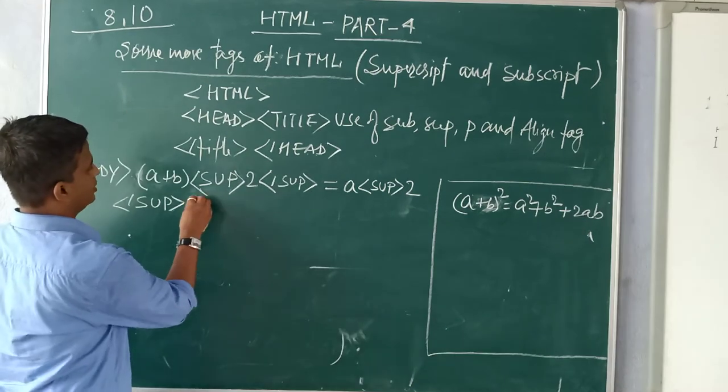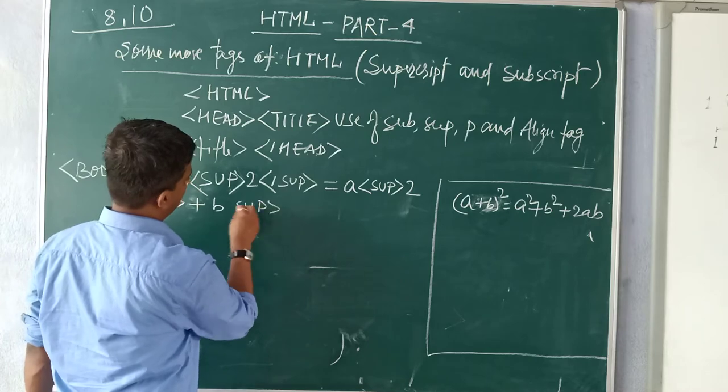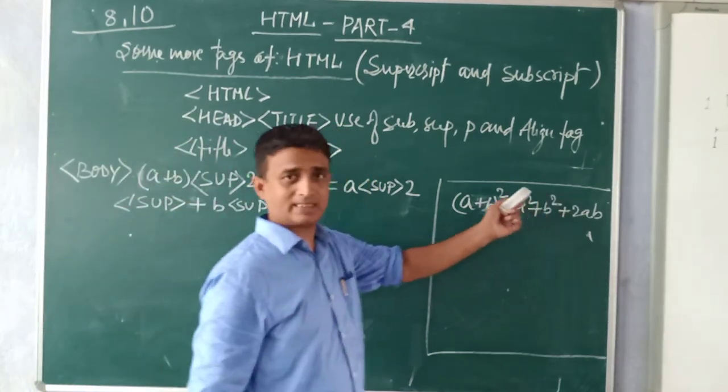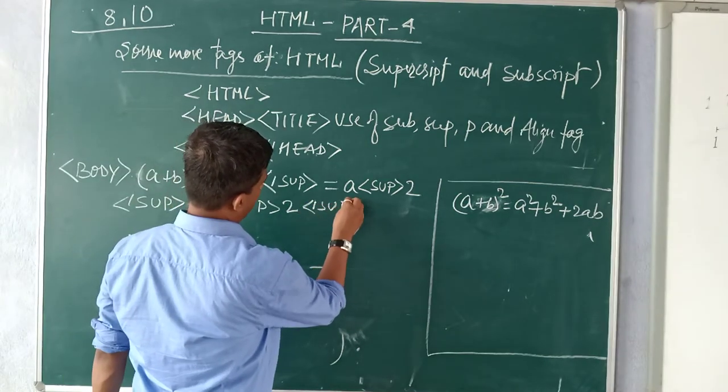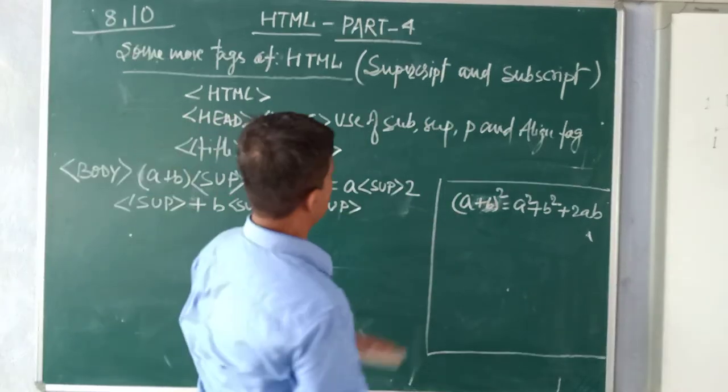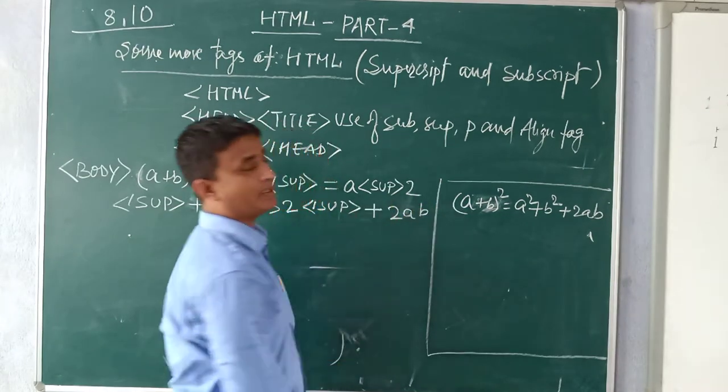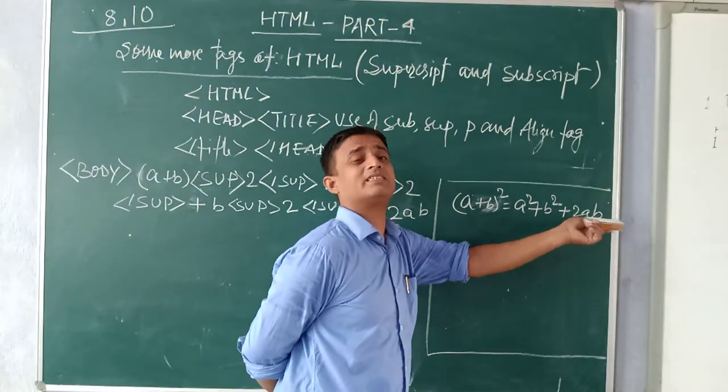Last time you will plus again like b then SUP is super. Then you will write 2 because you already mentioned 2, then close this super. Plus 2ab. Then plus 2ab you simply have to type, no superscript is required.